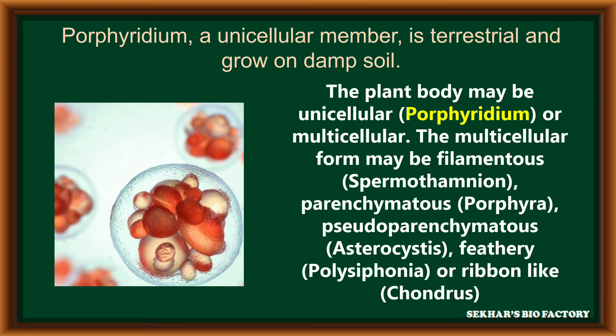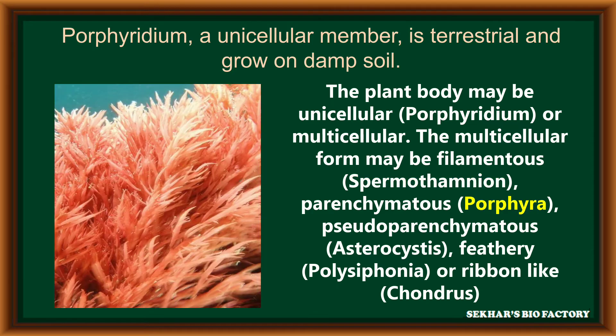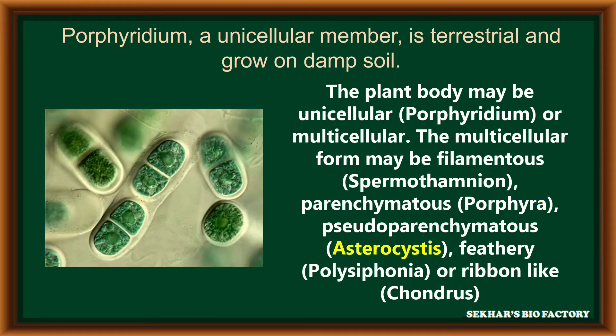In the plant body structure, very few members like Porphyridium are unicellular in nature, but remaining all Rhodophyta members are multicellular in nature. The multicellular members may be in the form of filamentous, e.g. Spermothamnion, some of the members having parenchymatous body, e.g. Porphyra, and a few members have pseudoparenchymatous body, e.g. Asterocystis.